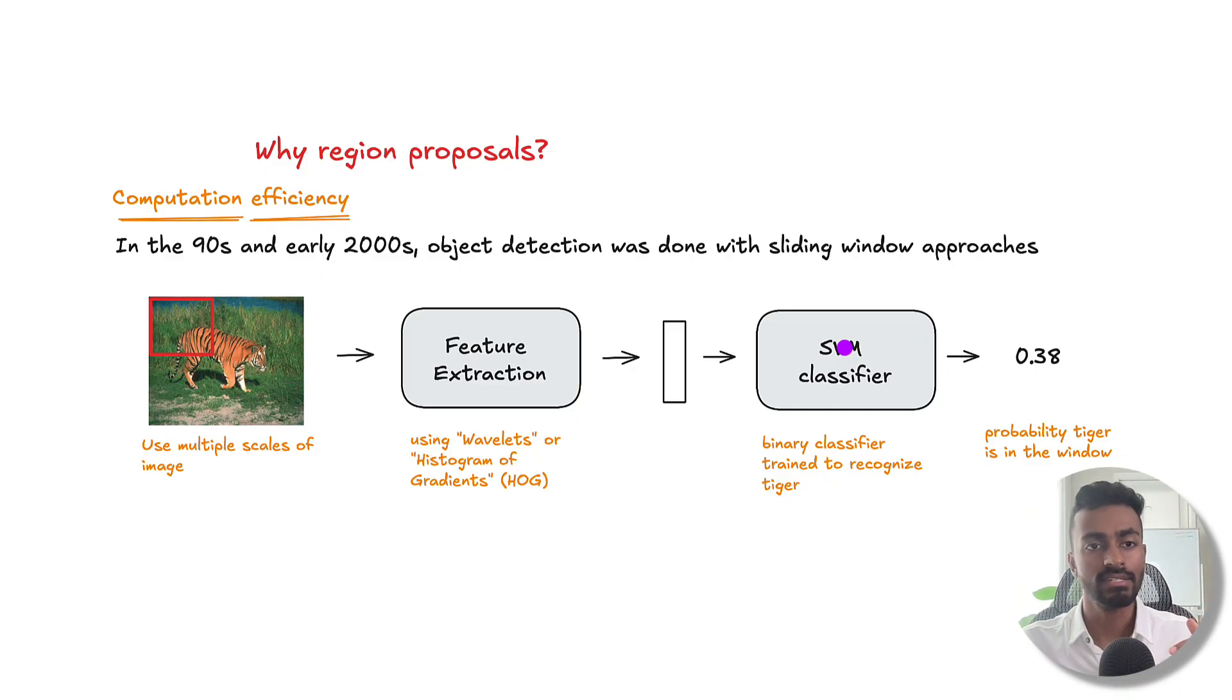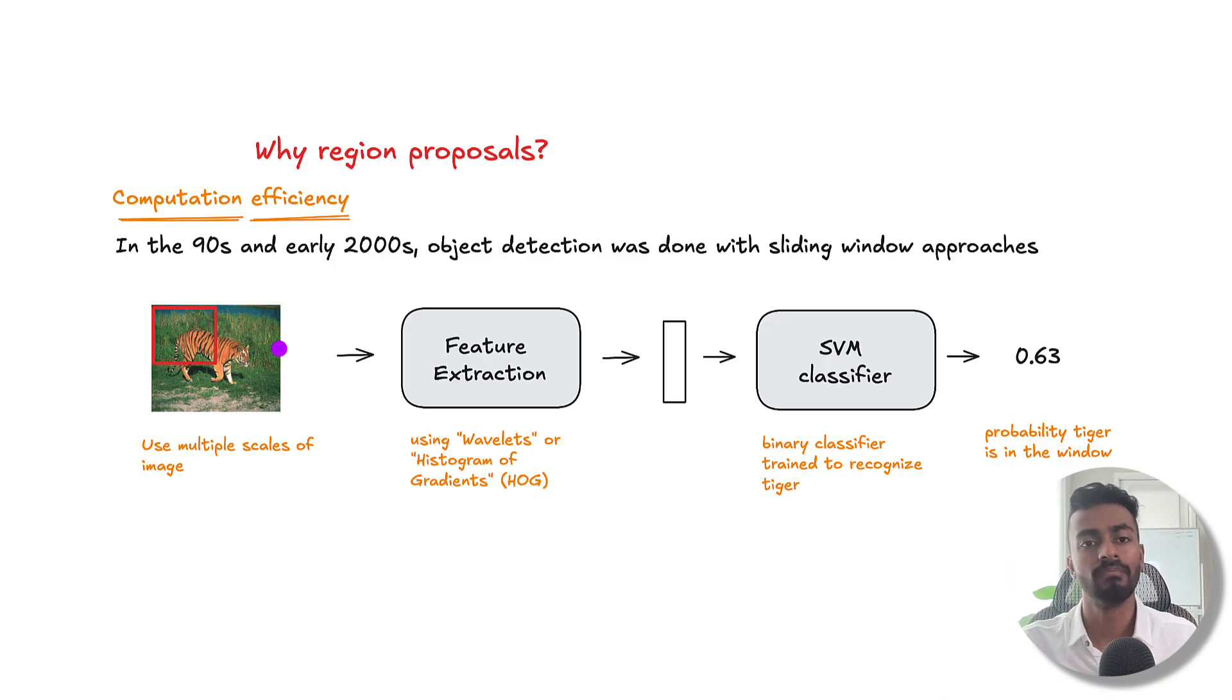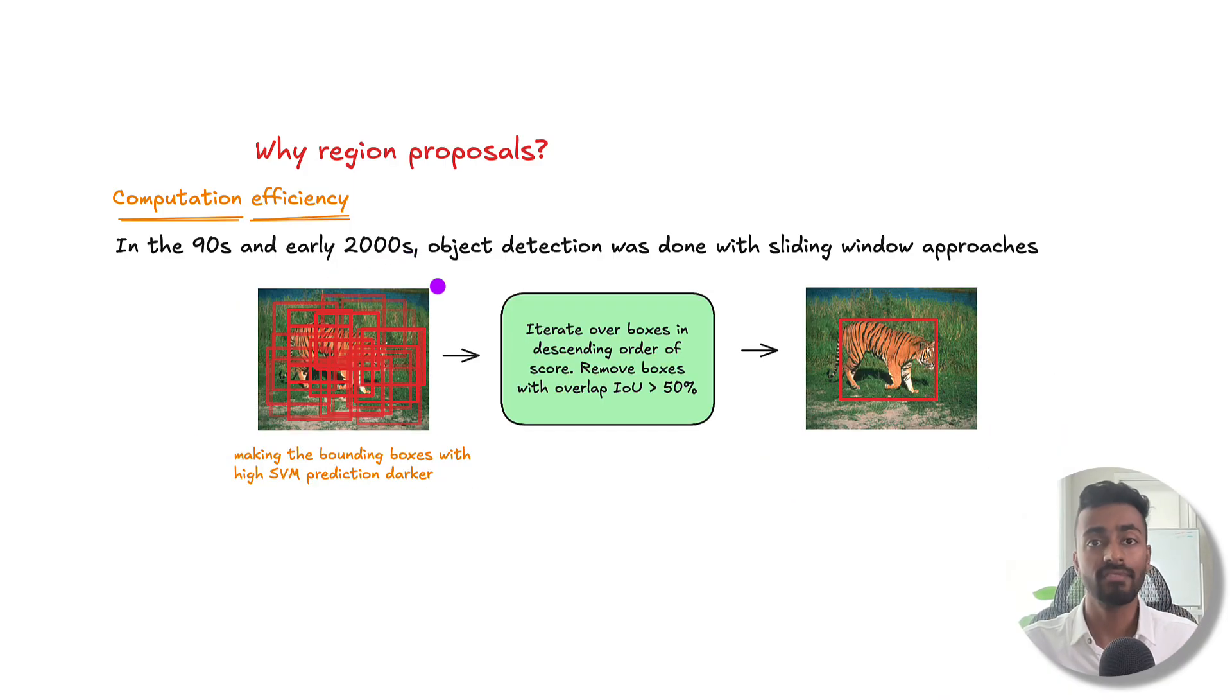And then we do this for images of even different scales to make sure that we're picking up objects of different sizes, some closer to the camera and some away from the camera.